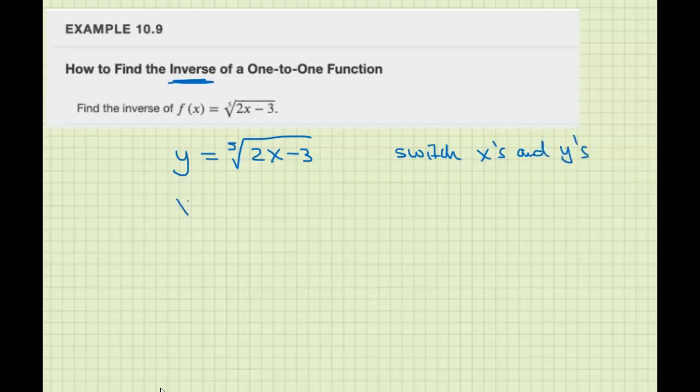x equals fifth root of 2y minus 3. Then we need to get y by itself.